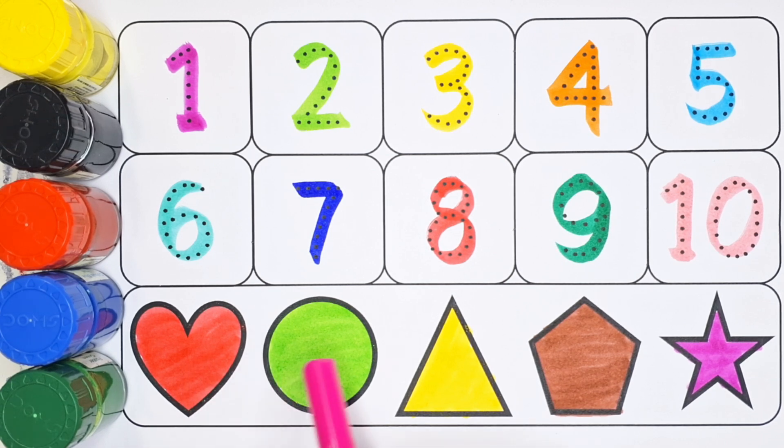Red color heart shape. Green color circle. Yellow color triangle. Brown color pentagon. Pink color star.